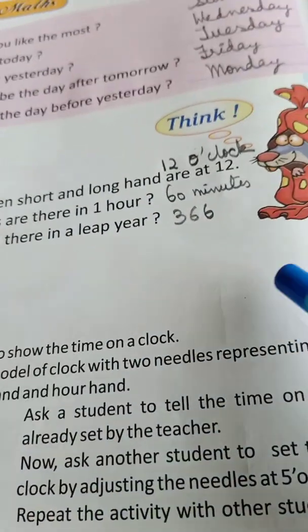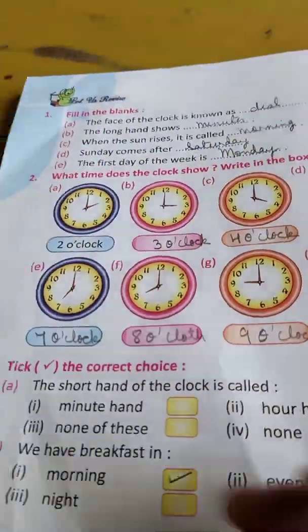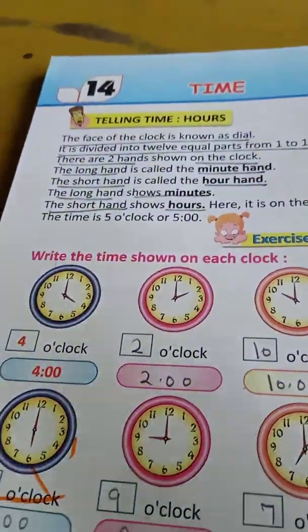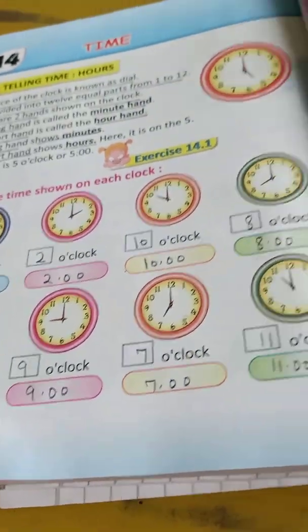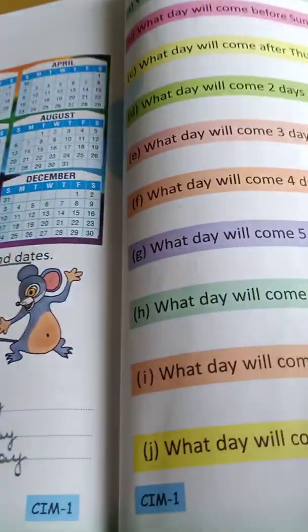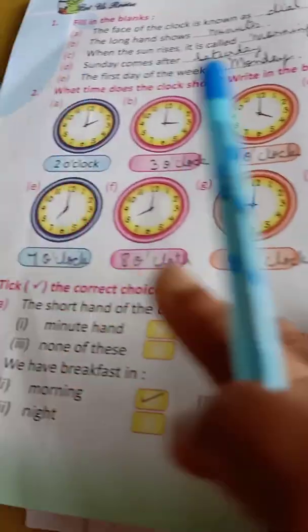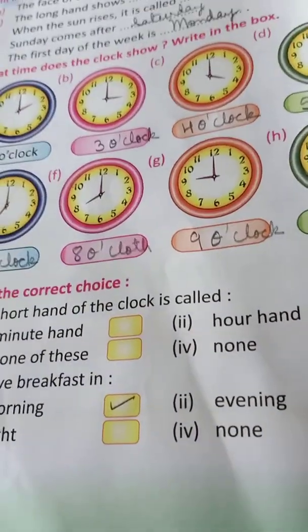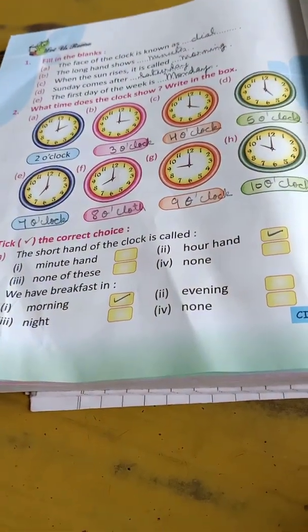We have done our book exercise of chapter 14, Time. Book exercise is done and copy work we'll do in the next video. Take care. Bye.